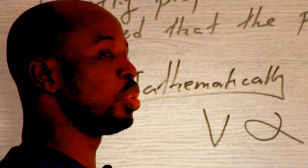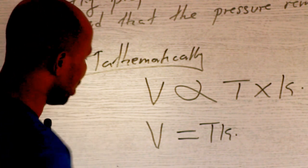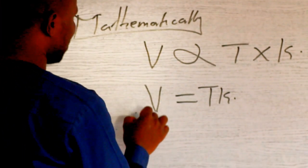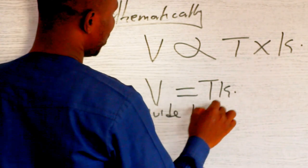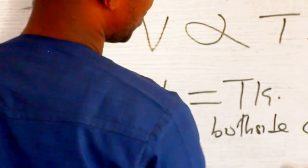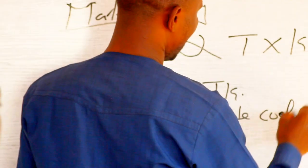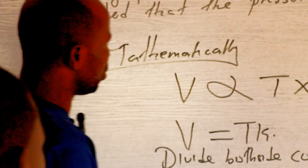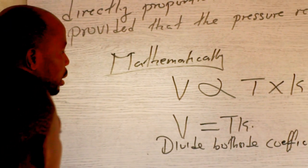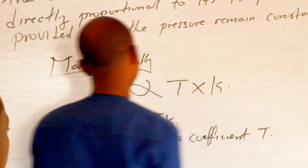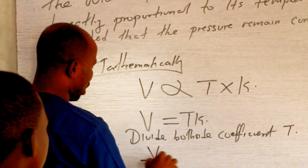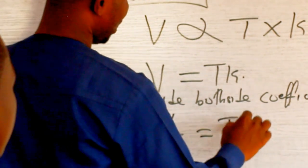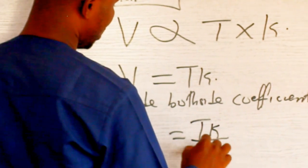All we need now to do is to make the K the subject. So if you are making the K the subject, that means we divide both sides by the coefficient of T. The coefficient of T is K. So we divide both sides by T. And that one will give us V over T equals TK all over T. And this one will cancel. So the equation will now be V over T equals K.